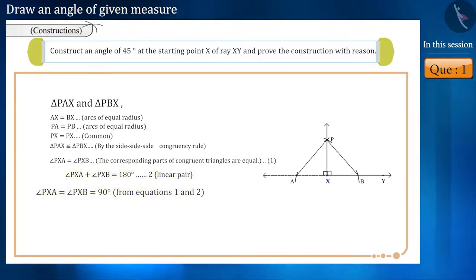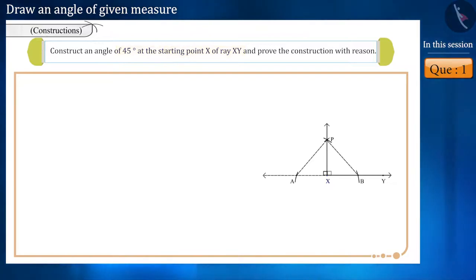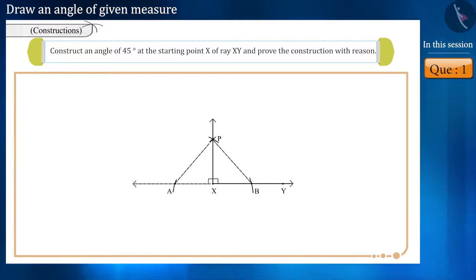Which means angle PXA is equal to angle PXB is equal to 90 degrees from equations 1 and 2. That is, at point X, we have made an angle of 90 degrees. Now tell us whether it is easy to construct 45 degree angle from here or not. Now from here, follow the steps of angle bisector.